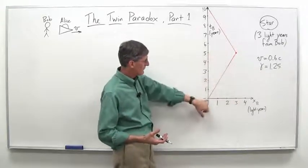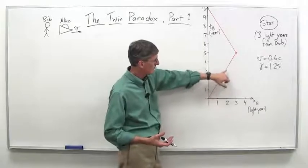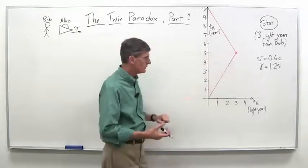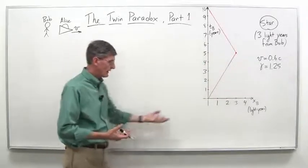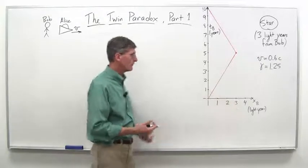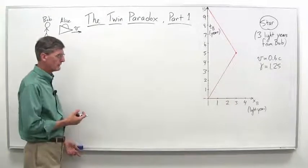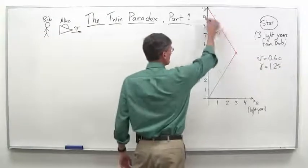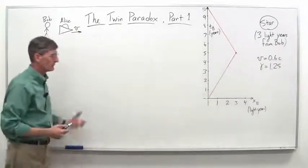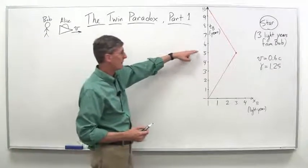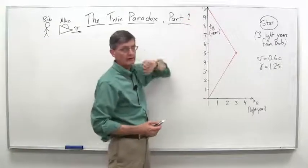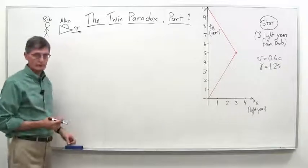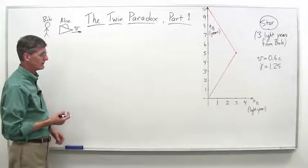So what happens here is this is her world line, Alice's world line, going up to five years and traveling three light-years there, and so that's the speed of 0.6 times the speed of light. And then she turns around at that point and comes back again. So another five years according to Bob's clocks, and then she's back at 10 years in terms of what he is thinking.